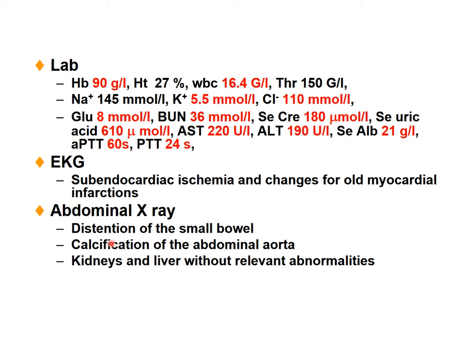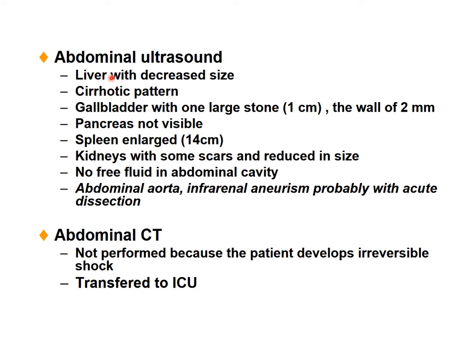Abdominal X-ray: distension of small bowels, calcification of abdominal aorta — a sign of atherosclerosis. Kidneys and liver without developmental abnormalities. Abdominal ultrasound shows liver decreased in size with a cirrhotic pattern. In the gallbladder, one large stone found and wall thickened about 2 mm. Pancreas not visible. Spleen enlarged — splenomegaly due to increased portal hypertension. Kidneys with scars, reduced in size. No free fluid in abdomen — no ascites.